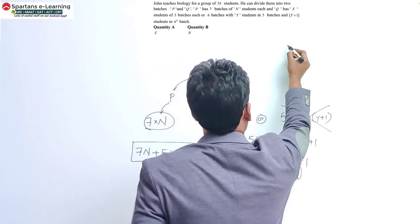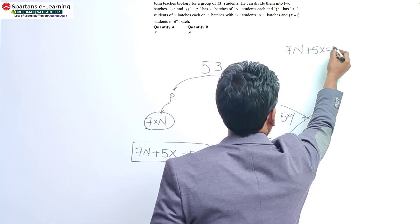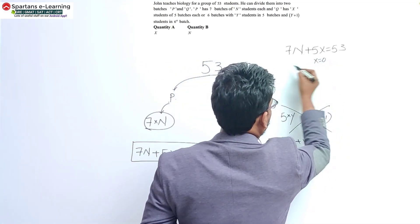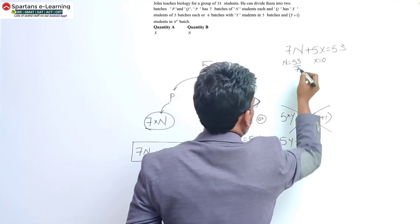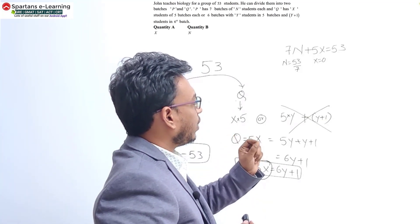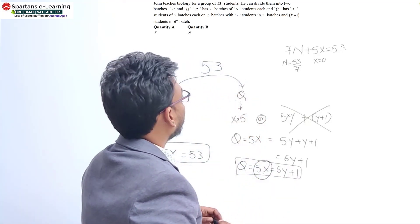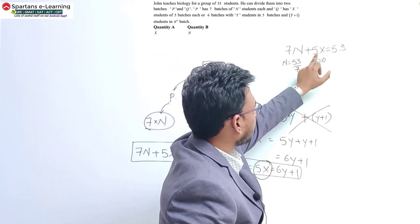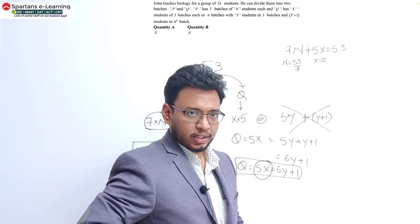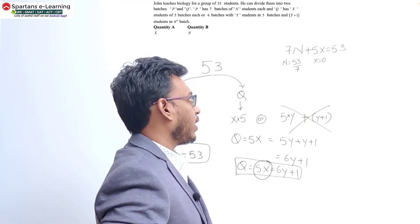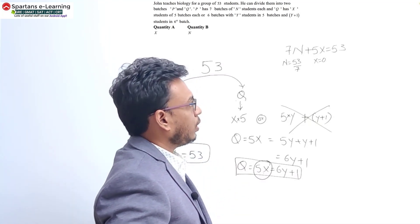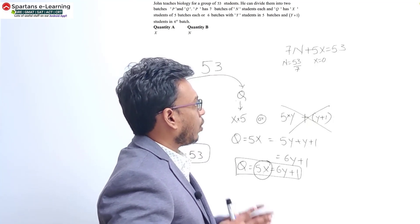Using 7N plus 5X equals 53: if X equals 0, N becomes 53/7, which is a decimal. In a practical scenario, X and N represent students — seven batches of N students, five batches of X students — and students cannot be decimals. You can't have half a student or 0.75 of a student. So X and N must take only positive integral values or zero. The question asks for non-negative integral solutions.